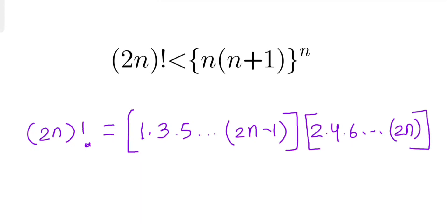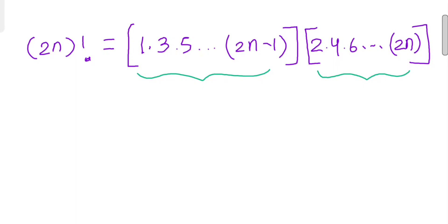Now let's consider the odd product and even product separately, and let's use AM-GM inequality on these. First, if you take the even product, the even product means here 2·4·6 all the way up to 2n.